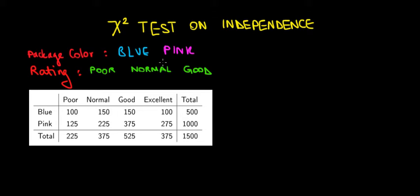The setting here: we have a company that produces detergent and it packages it in two different colors, blue and pink. We also have three different ratings: poor, normal, and good. The intuition is whether there can be a relationship between the package color and the rating that consumers give, because we think consumers may like pink packages more than blue and are more likely to give a higher rating. For marketers, knowing this means we'd produce more pink products and have a better-rated product on the market.